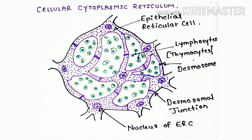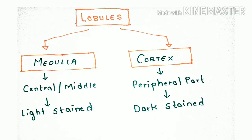In the diagram of epithelial reticular cells, it is clearly shown that the epithelial reticular cells and their processes are connected via desmosomes. This cytoplasmic reticulum supports the lymphocytes of the thymic lobule. This was all about the supporting framework of the thymus.